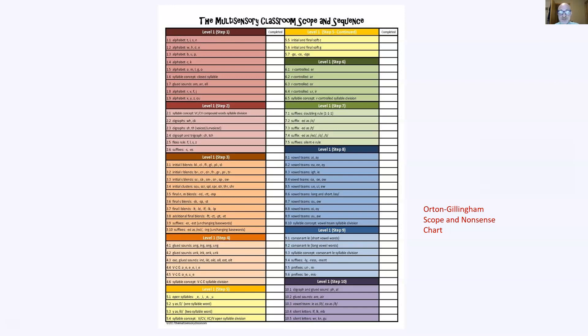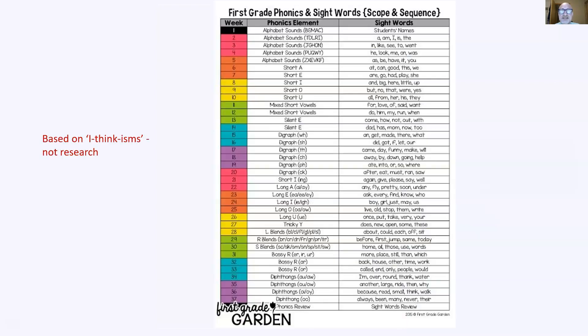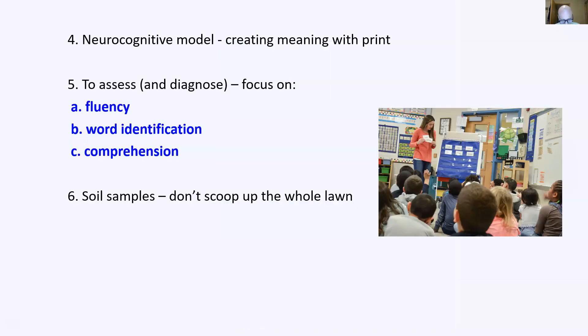Here's another scope and sequence chart. Again, based on this same idea that you teach all these little parts in this same order to all students because they are standardized products, of course, moving along on a conveyor belt. Not really. The neurocognitive model of reading says reading is not sounding out words. It's creating meaning with print.